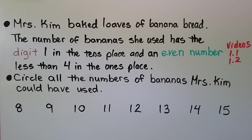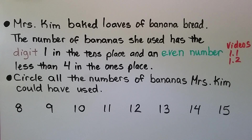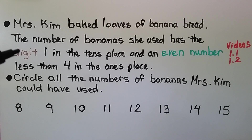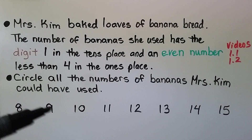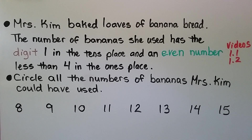Mrs. Kim baked loaves of banana bread. The number of bananas she used has the digit 1 in the tens place and an even number less than 4 in the ones place. We need to circle all the numbers of bananas Mrs. Kim could have used. It's telling us that there was a 1 in the tens place, so 8 and 9 don't have a 1 in the tens place — we can cross those out.